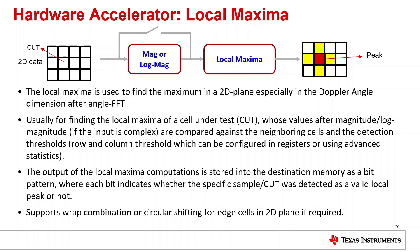The local maxima path: local maxima is computed in a 2D plane after angle FFT in the Doppler-angle plane. The magnitude or log magnitude operation is optional in case the input 2D data is complex. To find the local maxima of the cell under test, it is compared across neighboring cells and a detection threshold, and the output of local maxima computation is stored as a bit pattern in the local destination memory. Other features like finding local maxima of edge cells, circular shifting, or wrap combination are also supported in the local maxima engine path.